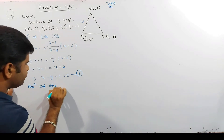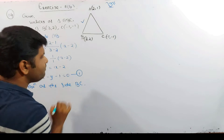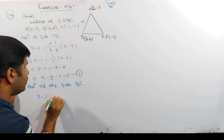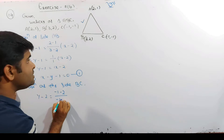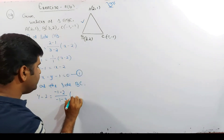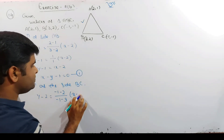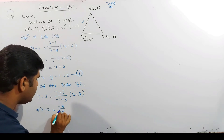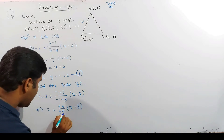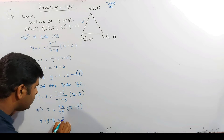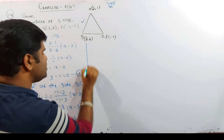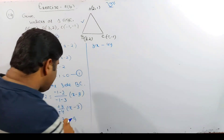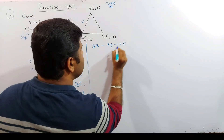Now we do the equation of side BC. B is (3,2) and C is (-1,-1). Using the two-point form: y - 2 = (-1-2)/(-1-3) × (x - 3), so y - 2 = (-3)/(-4) × (x - 3), giving 4y - 8 = 3x - 9, which means 3x - 4y - 1 = 0. This is equation 2.